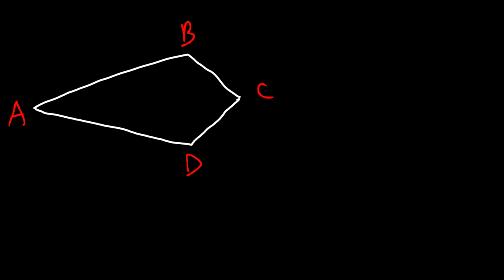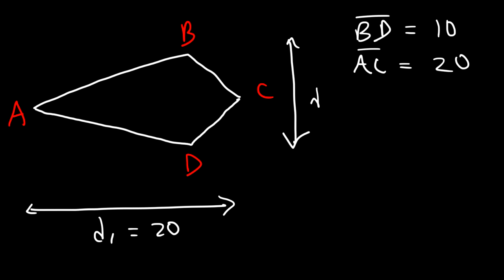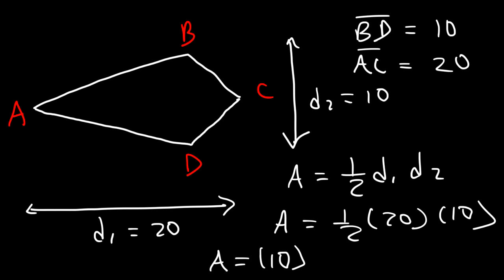In this video we're going to focus on calculating the area of a kite. We have kite ABCD where BD is equal to 10 and AC is 20. AC is the length of one diagonal D1, and BD is the other diagonal D2. The area of a kite is the same as the area of a rhombus: one half times D1 times D2. So it's one half of 20 times 10. Half of 20 is 10, and 10 times 10 is 100. The area of this kite is 100 square units.